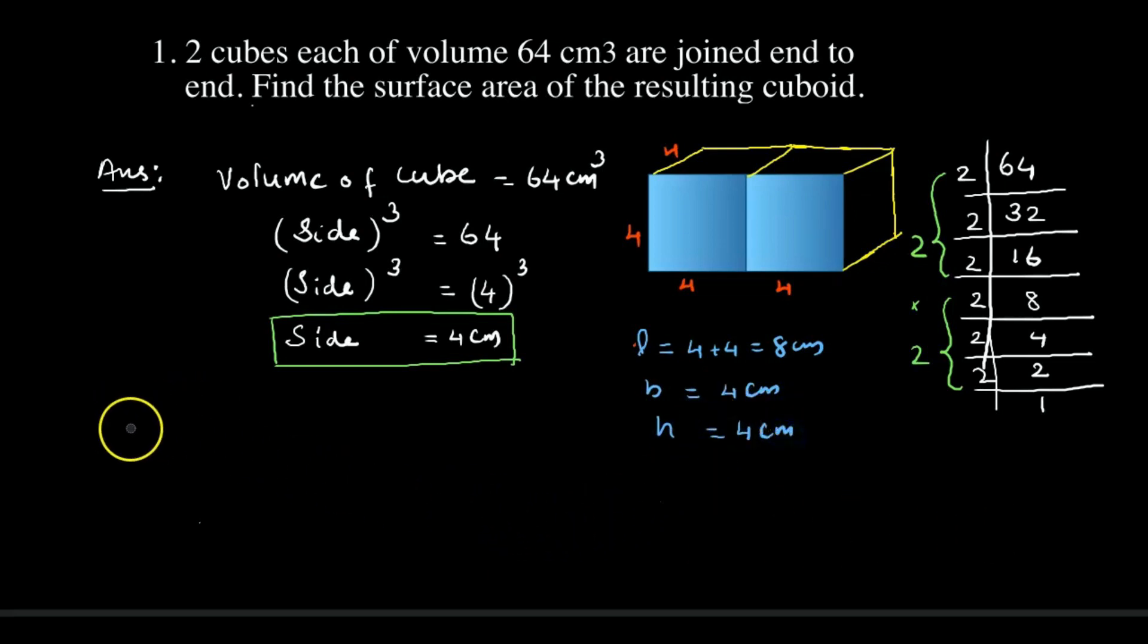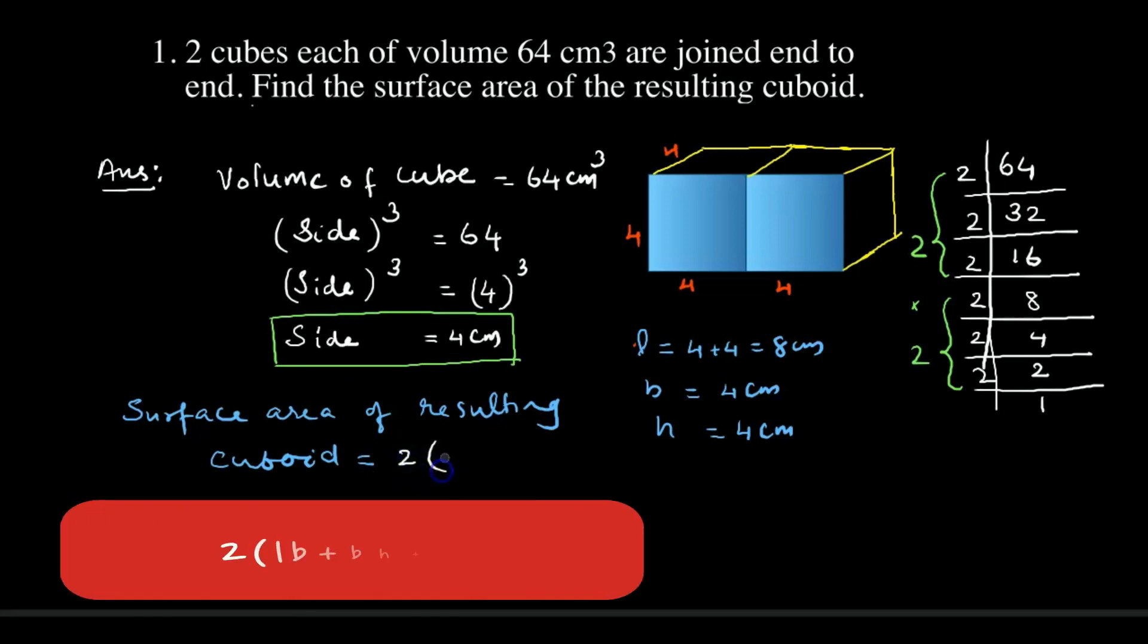Now we have to find the surface area of the resulting cuboid. So let's write surface area of resulting cuboid equals—we use the formula TSA of cuboid: 2 into (lb plus bh plus lh).